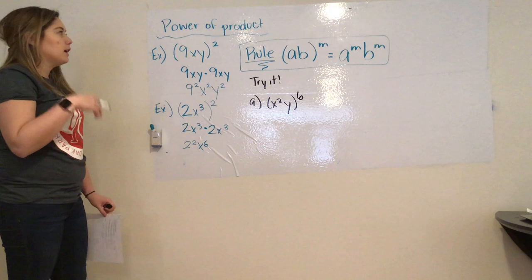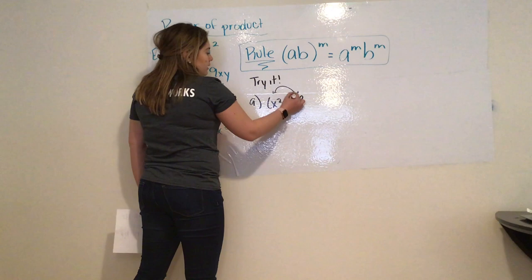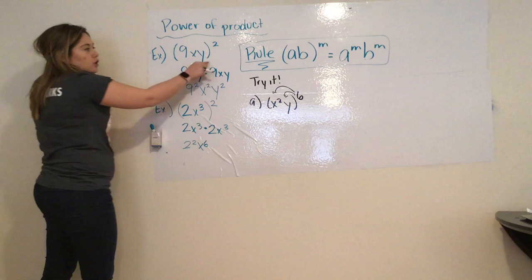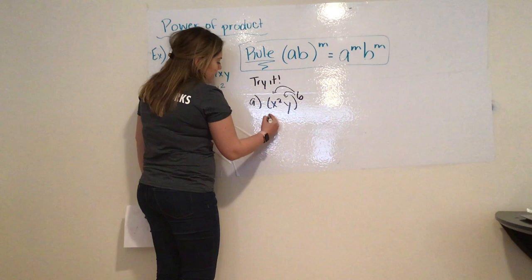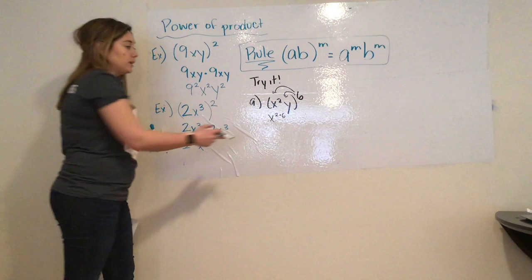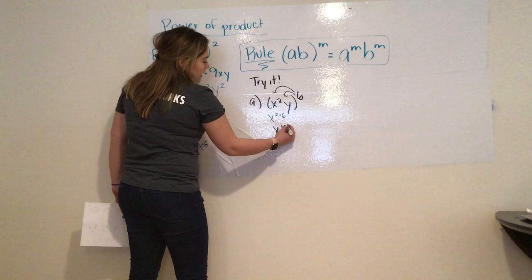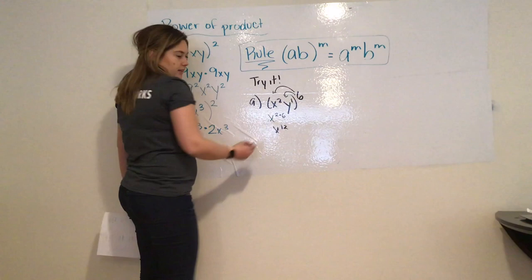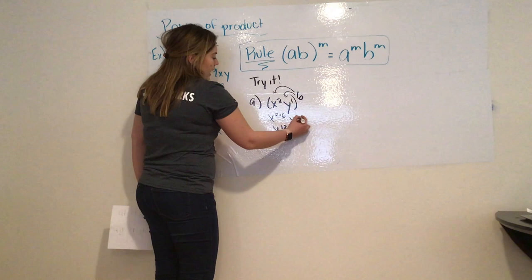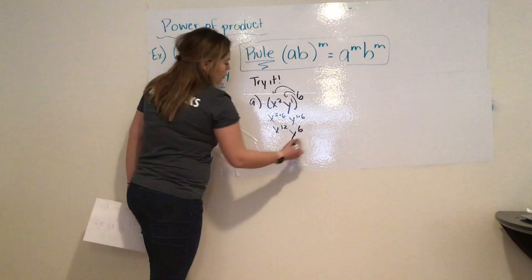So, the biggest thing with the power of product property rule, is that you need to make sure you distribute that power. Because, like we did with our examples here, we brought it to everything in the parentheses. You've got to make sure everything stays equal. So, in this case, it becomes x to the second times 6, because we're really multiplying x squared 6 times, which gives us x to the twelfth. And if it's a variable by itself, it's really y to the first, because anything to the first power is itself. So, y to the first times a power of 6 gives me y to the sixth. That is my answer.